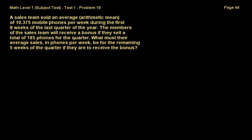Problem 19 asks: a sales team sold an average arithmetic mean of 10.375 mobile phones per week during the first 8 weeks of the last quarter of the year. The members of the sales team will receive a bonus if they sell a total of 185 phones for the quarter. What must their average sales in phones per week be for the remaining 5 weeks if they are to receive the bonus?